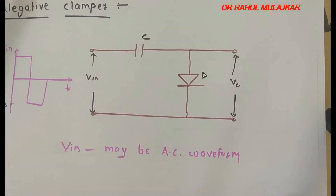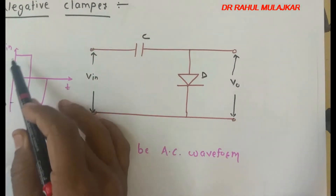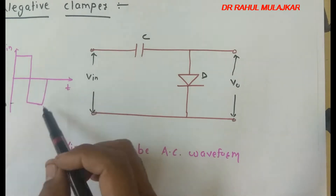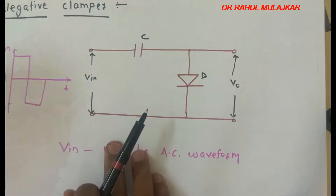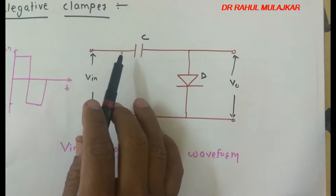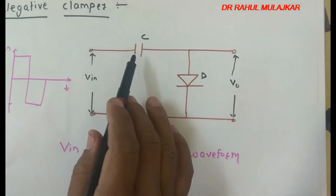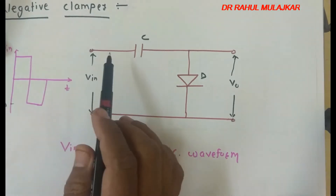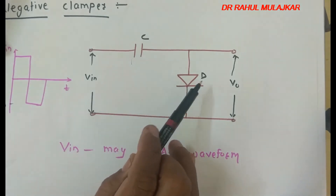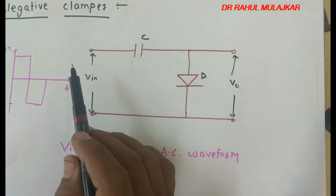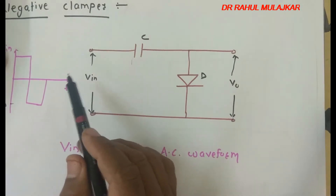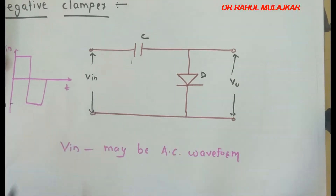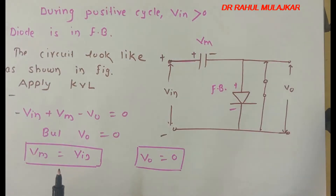Now we will see the negative clamper circuit. The input waveform may be a sinusoidal signal, a sine wave, square wave, or triangular wave. In the clamper circuit, two components play a very important role: capacitor and diode. In clippers we use resistor and diode, but in a clamper the capacitor plays a very important role to clamp the input AC signal. The output is taken across the load.